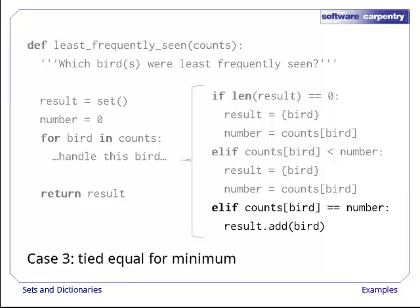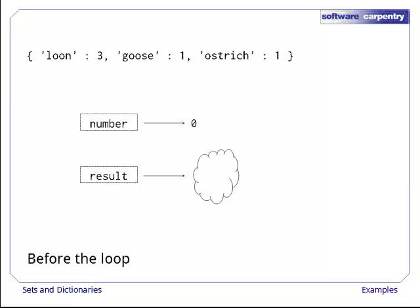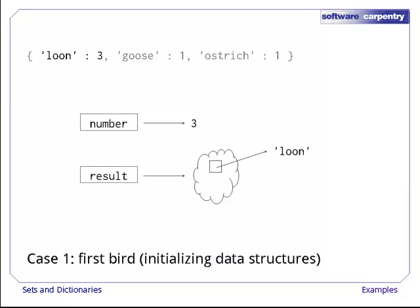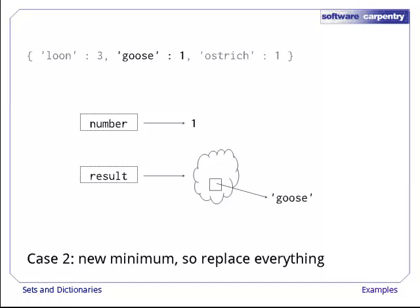Let's watch this function run. Our input dictionary has three entries. We initialize number to zero and result to an empty set. Processing the first entry in the dictionary takes us into the first of our three cases. Number is assigned three and loon is put in our set of birds.